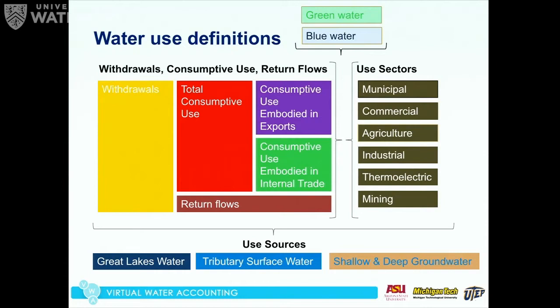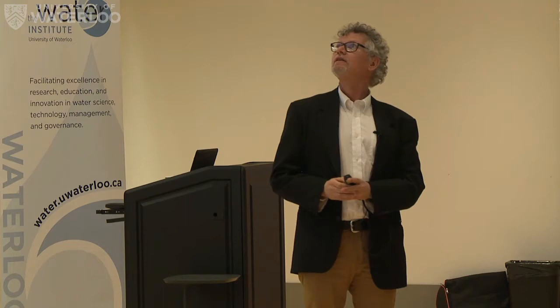Another distinction we make is between green and blue water. Green water is rainfall captured and used by vegetation — forests and crops use green water. Blue water is physically taken out of a water body and used for, say, irrigation. Green water is sort of 'free' water — it rains anyway — but different land uses will have different amounts of evapotranspiration: crops versus forests, for example.